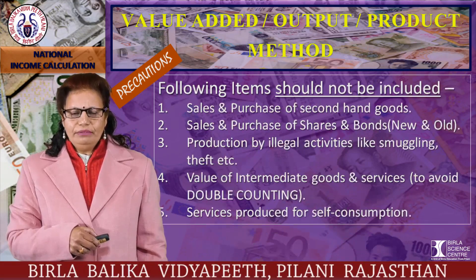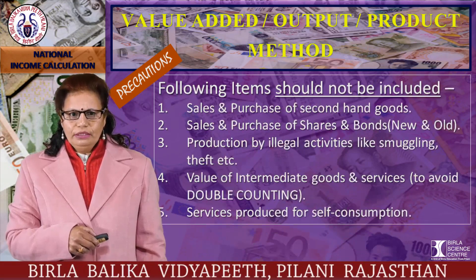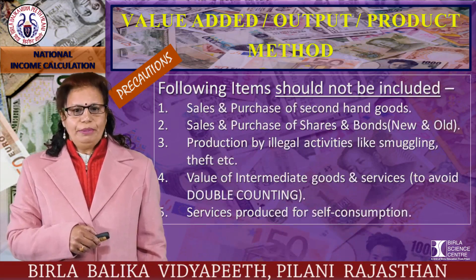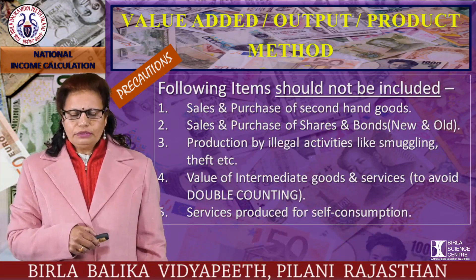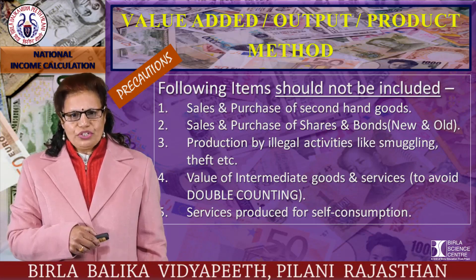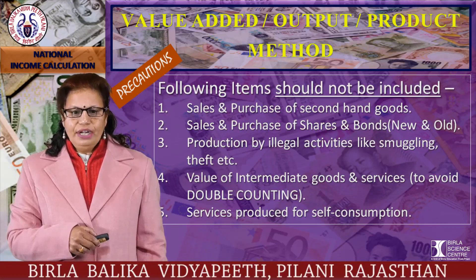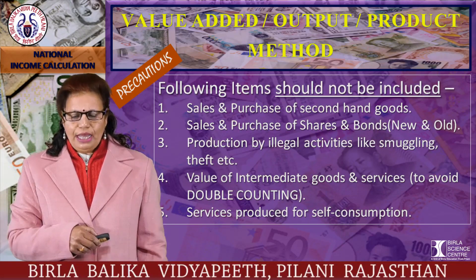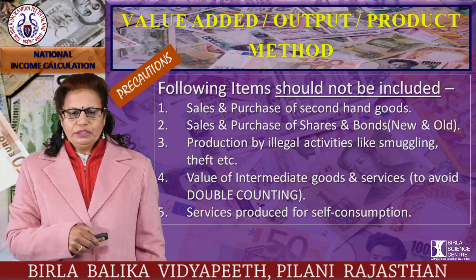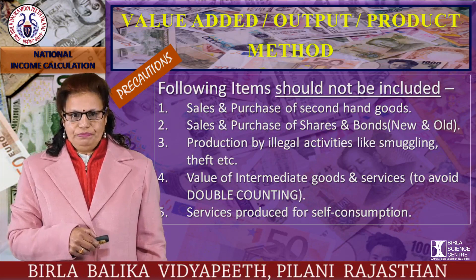The following items should not be included: sales and purchase of second-hand goods; sales and purchase of shares and bonds, whether new or old; production by illegal activities like smuggling and theft; value of intermediate goods and services (to avoid double counting); and services produced for self-consumption.